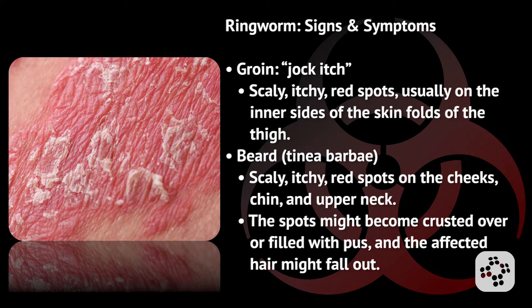If the infection is around the groin area, it's known as jock itch. It is noted by scaly, itchy, red spots, usually on the inner sides of the skin folds of the thigh. If it is in the beard, there are scaly, itchy red spots on the cheeks, chin, and upper neck. The spots might become crusted over or filled with pus, and the affected hair may fall out.